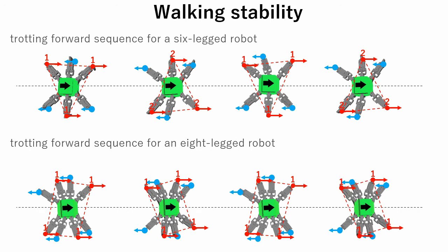In an eight-legged robot, leg contact points form a square. This means that an eight-legged robot is even more stable than six-legged robot because the distance between the center of the mass and the outer boundary of the square is greater than that of the triangle.